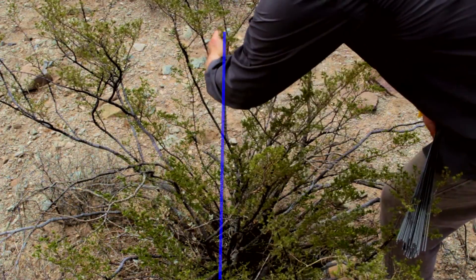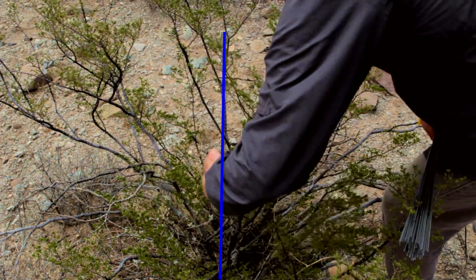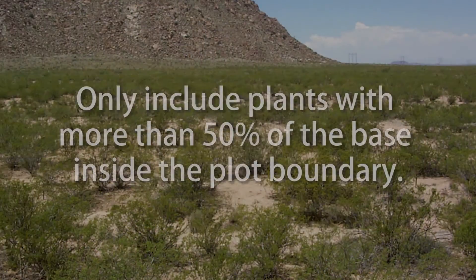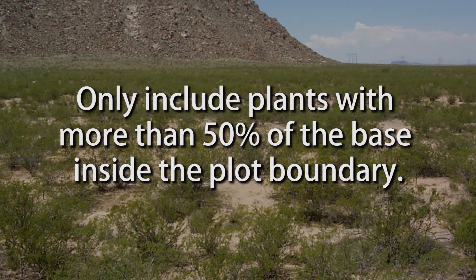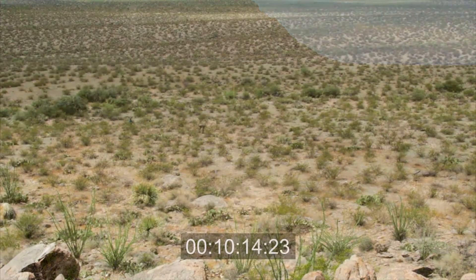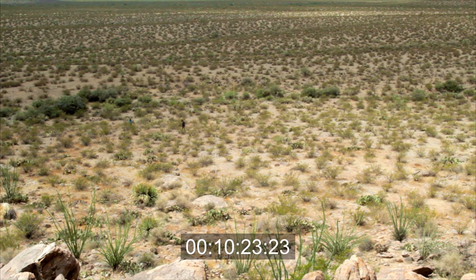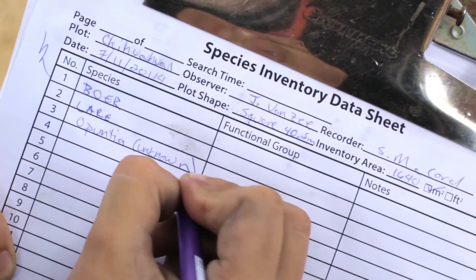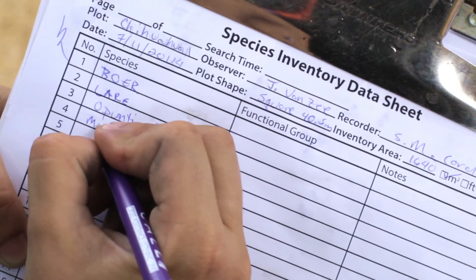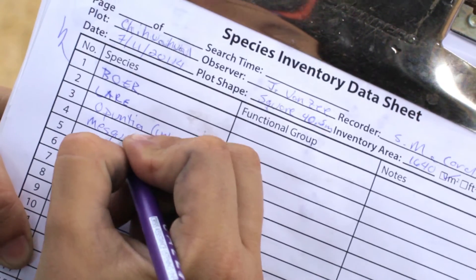Only include plants with more than 50% of their base inside the plot boundary. The data recorder should stand outside the plot and inform the observer of the time remaining.